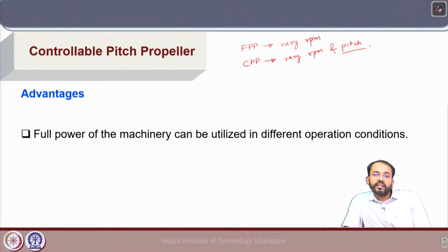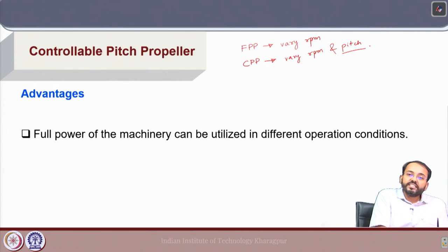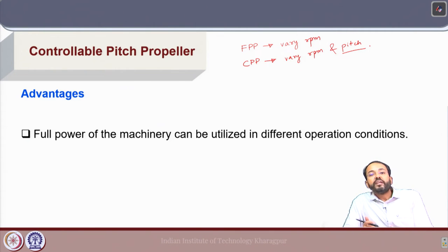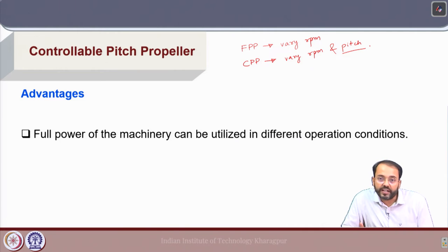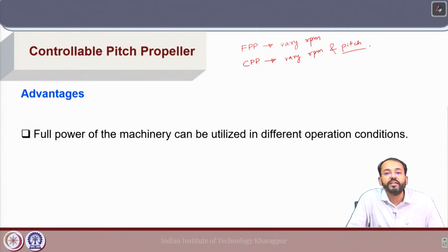For a tug, there is a towing duty where the tug is pulling another vessel — the power requirement is very high at that condition — and there is also a free running speed condition. Having a controllable pitch propeller where full power of the machinery can be utilized in both cases by changing the propeller blade pitch is very beneficial.